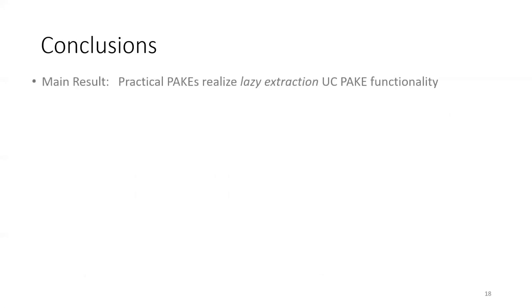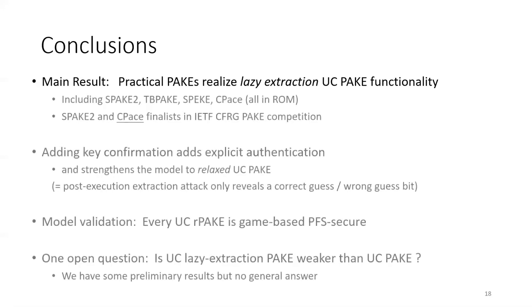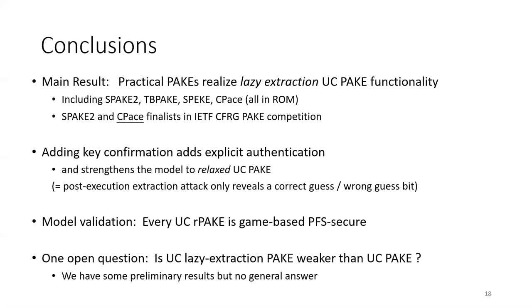In conclusion, we show that practical PAKE protocols are actually UC-secure as long as we slightly relax the standard UC PAKE functionality to lazy extraction PAKE. Adding key confirmation has two effects: it allows explicit authentication, and it upgrades lazy extraction PAKE to the slightly stronger relaxed PAKE. Finally, we show that every UC PAKE is game-based secure with perfect forward secrecy. There are many interesting open questions; one is whether lazy extraction PAKE is really weaker than the standard UC PAKE, and if so, in what cases or in what sense they are weaker.